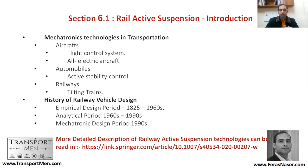This is an example of mechatronic systems used in transportation and automobiles — you have active stability control. For example, if the vehicle senses that you are about to slide, the active stability control adds additional control to the vehicle as a result of that sliding. In railways, this can be seen in tilting trains and other applications, but tilting trains is the biggest one.